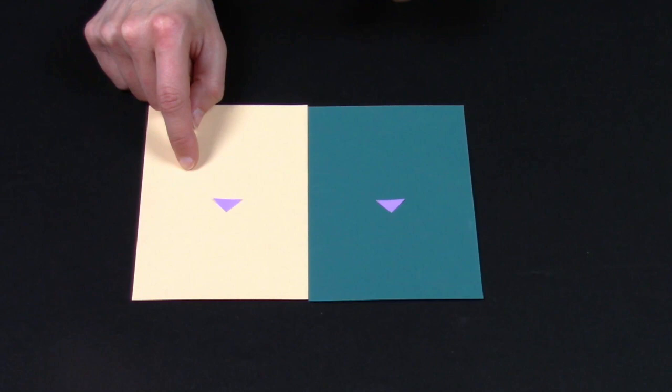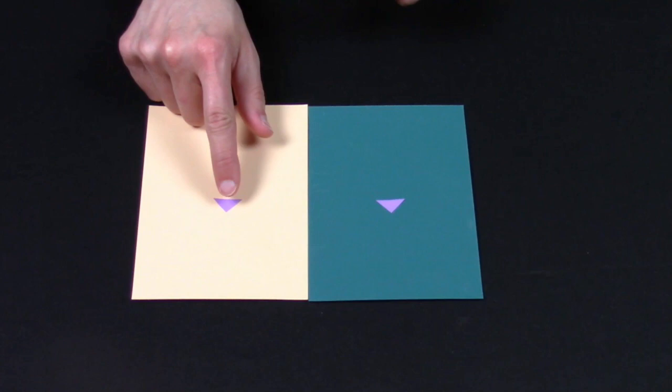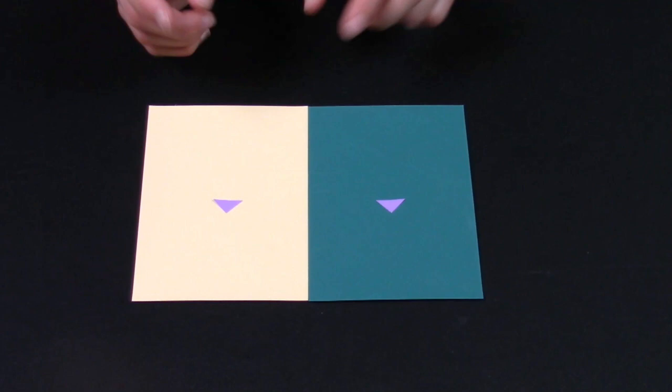This background is lighter. It's pretty light. So it subtracts its qualities from the key color. That's why the key color appears darker.